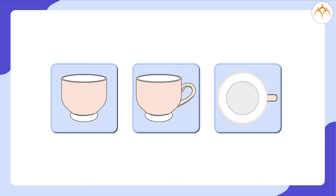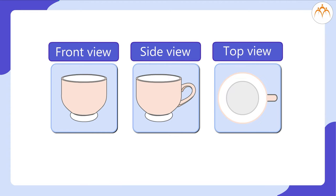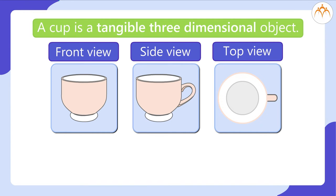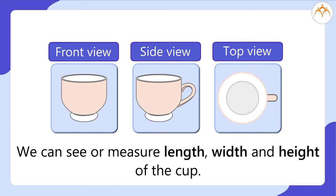Now let us look at it from above. The cup has three types of views: one from front, one from side, and from above. Actually a cup is a tangible three-dimensional object. We can see or measure length, width and height of the cup.